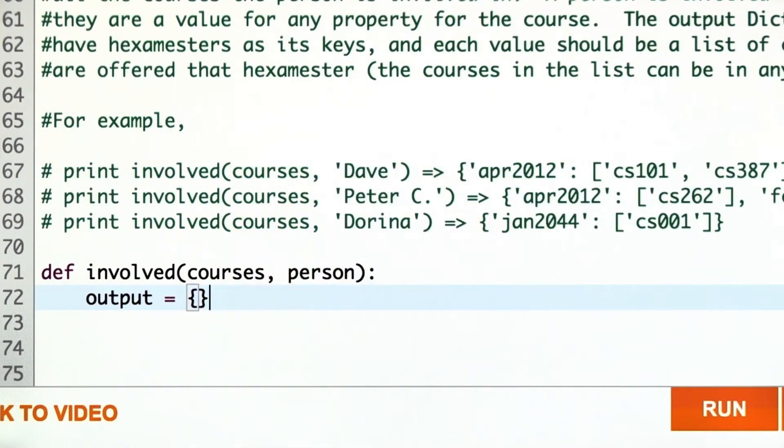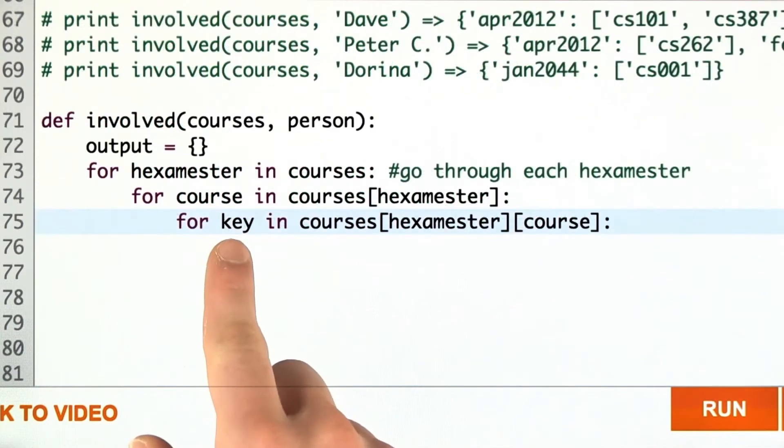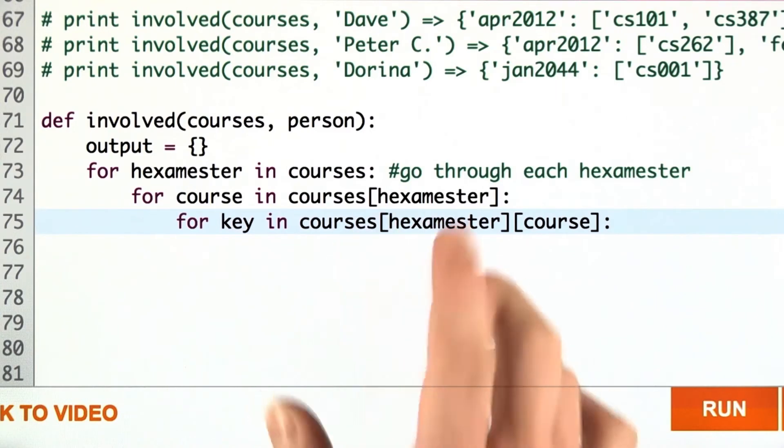The first thing I'm doing is creating the output dictionary. We're going to go through each hexamester, go through each course in each hexamester, and go through each key in the name value pairs.